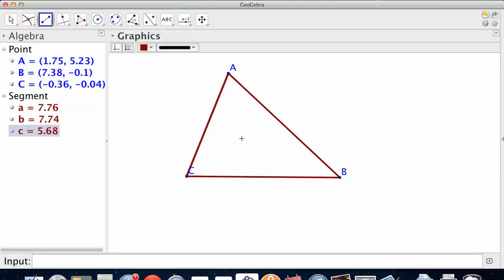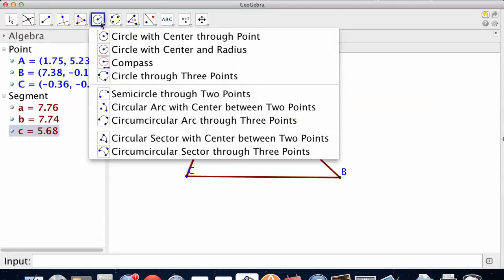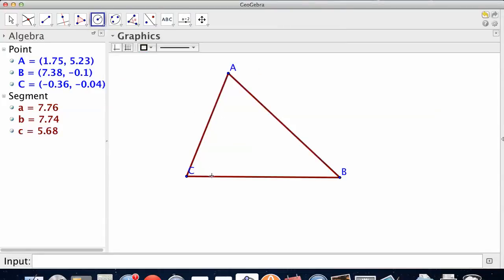We need a perpendicular that goes from CB up to the top of the triangle. Well, it's easy to draw perpendicular. You just draw two circles of the same size.